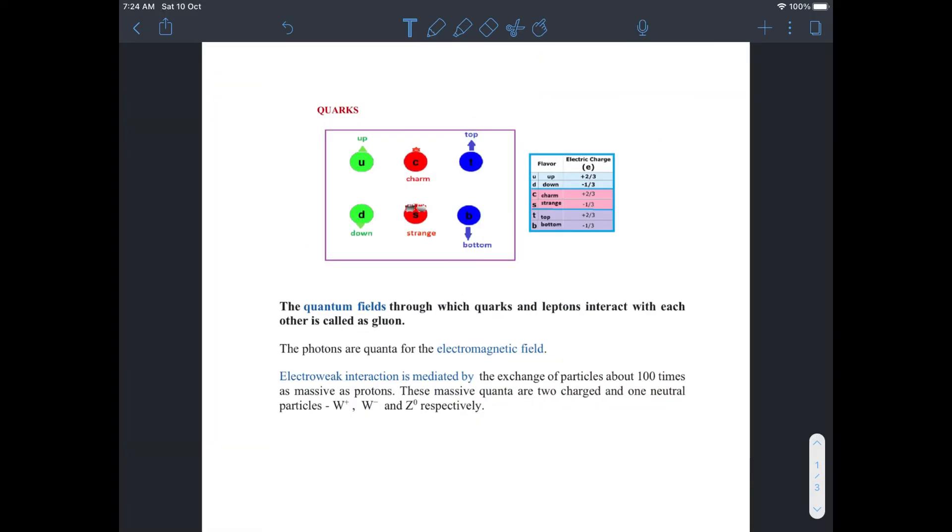Quarks come in six flavors and have their own antiparticles. Quarks have charges that are either positive two-thirds or negative one-third of the electron charge. While the antiquarks have the opposite charges, each lepton has an antiparticle. Positron is an antiparticle of electron. Antiparticle of neutrino is antineutrino.